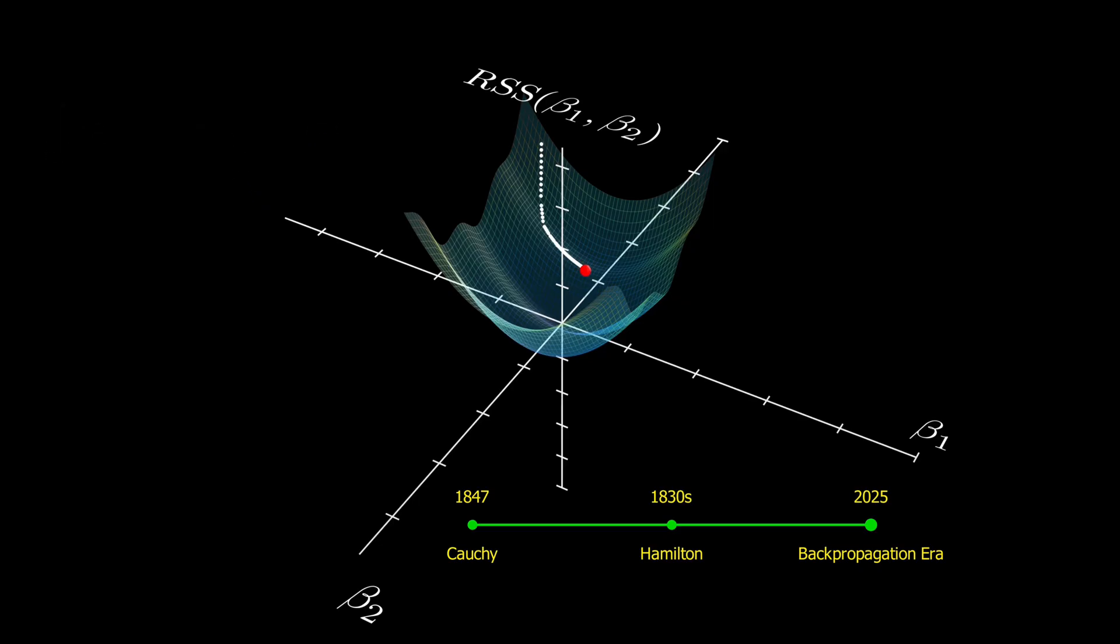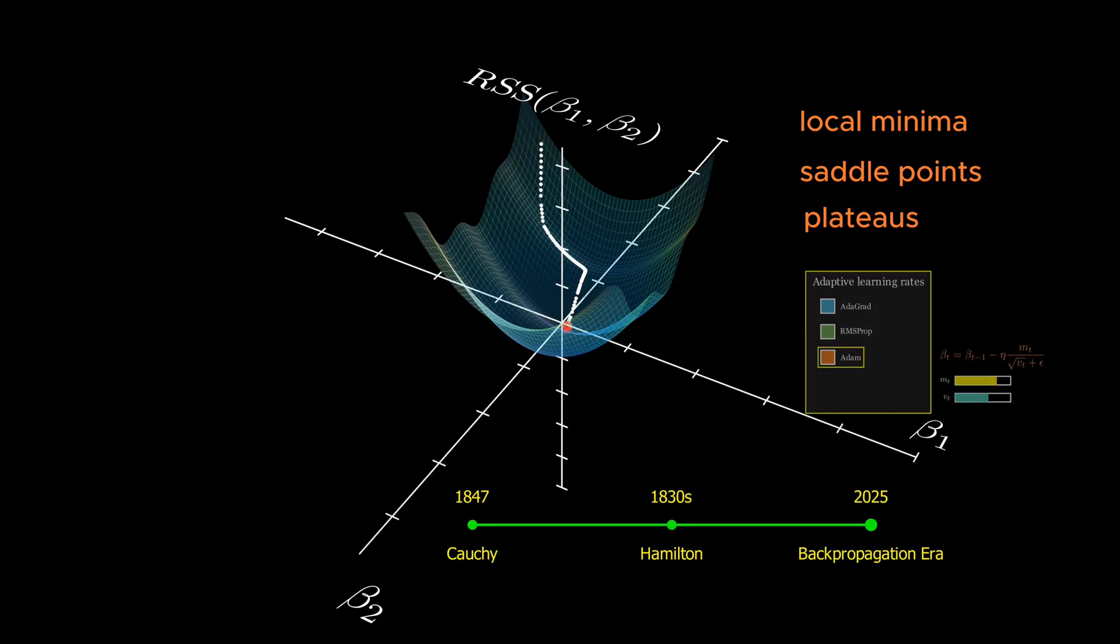It's not perfect. It struggles with local minima, saddle points, and plateaus. But thanks to ongoing innovations in optimization, we're making gradient descent faster, more reliable, and more powerful, pushing the boundaries of what machines can learn.